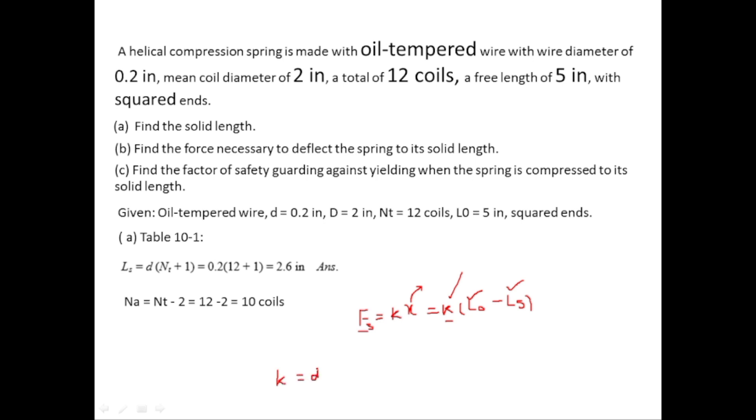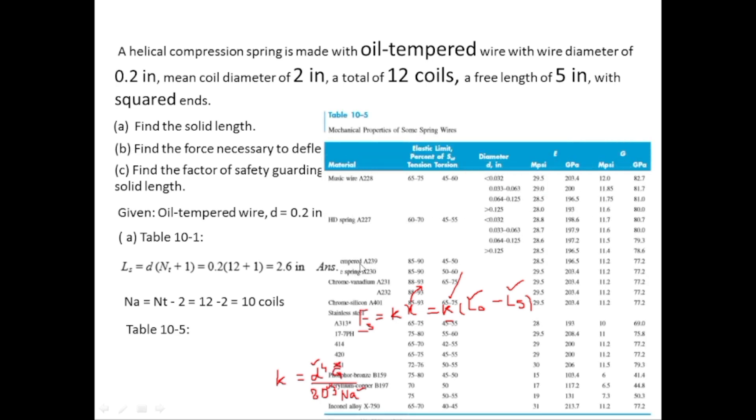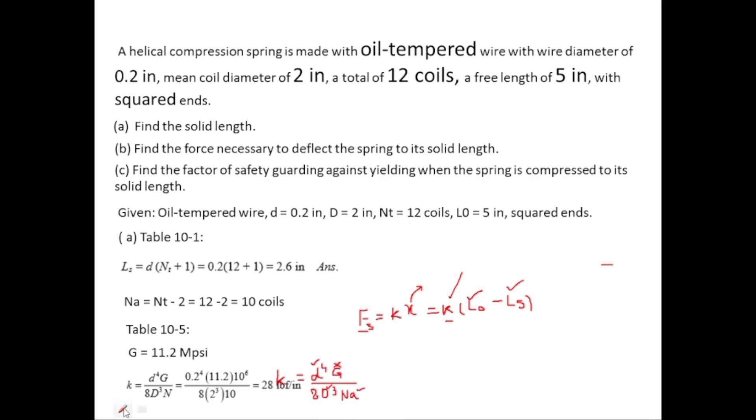K equals lowercase d to the power 4 times G divided by 8D cubed NA. The values of NA, D, and lowercase d are known. To find G, use table 10.5. For oil-tempered wire, G value is 11.2 mega psi. So K equals 0.2 to the power 4 times 11.2 mega psi divided by 8 times 2 cubed times 10, which gives K equals 28.4 per inch. FS equals K times L0 minus LS, so 28 times 5 minus 2.6 gives 67.2 pound force.